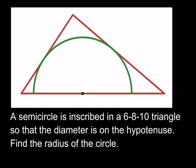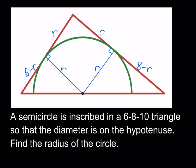I'm going to start by making some connections. We have a center here, and I'm going to connect the center to one of the points of tangency, and then connect that to another point of tangency. Those are going to make 90-degree angles, and this is going to form a square. Each side of the square is going to be of length r. Since the legs are 6 and 8, this should be 6 minus r, and this should be 8 minus r.